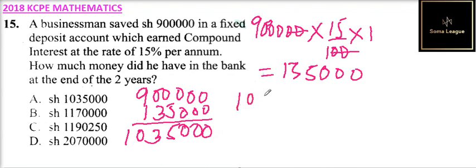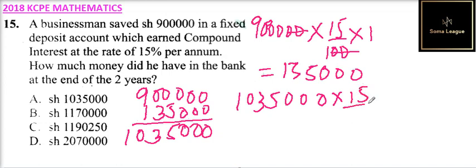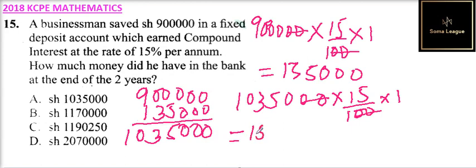For the second year, you multiply 1,035,000 by 15, then divide by 100, multiplied by 1. That gives 10,350 times 15, and you get 155,250. So that is the interest earned in the second year.